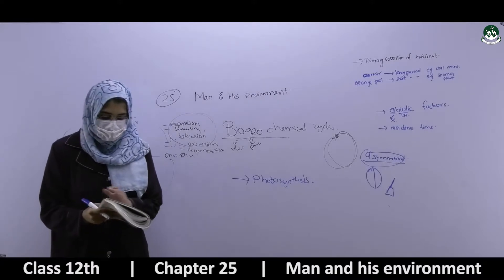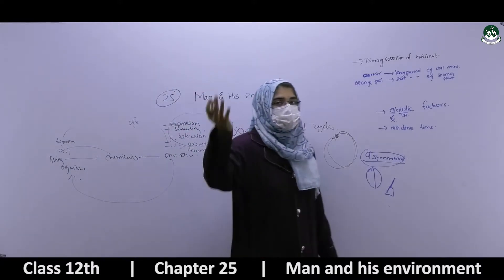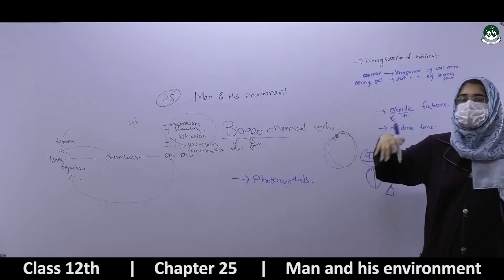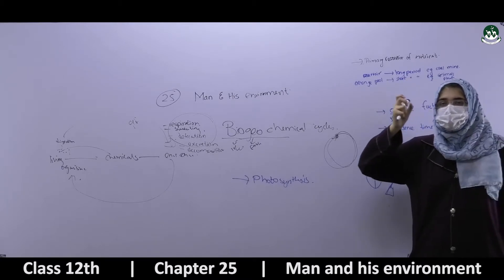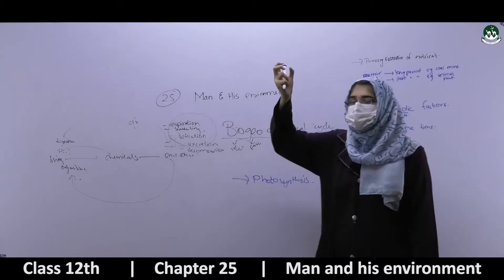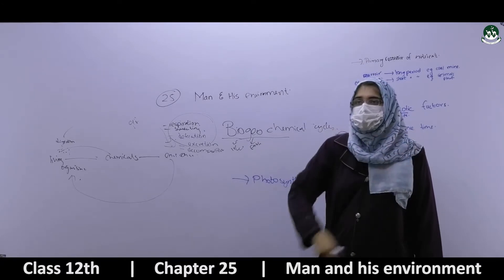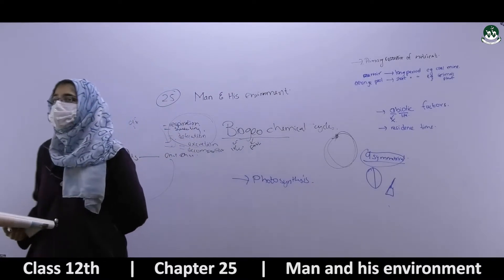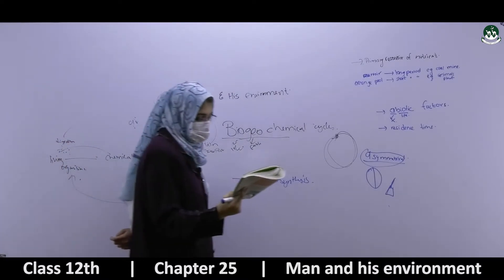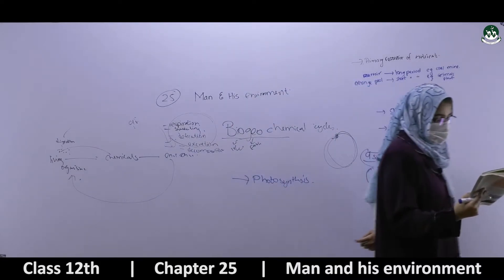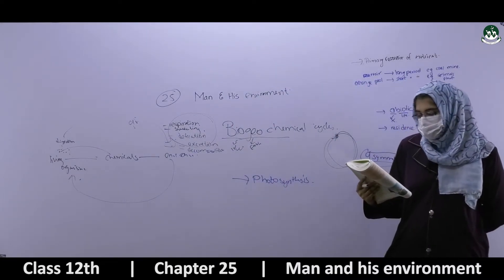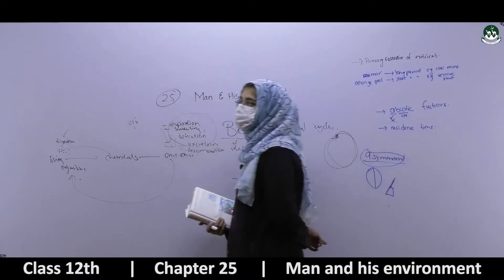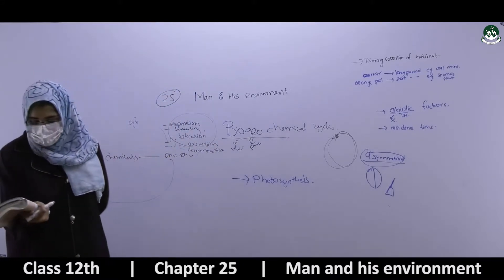Do you know there is as much water today as there was thousands of years ago? This is possible due to the amazing water cycle. The ocean is the major source of water, containing 97% of Earth's water. The water cycle is driven by solar energy, which evaporates water, and by gravity, which draws water back in the form of precipitation — rain, snowfall, dew, and hail.